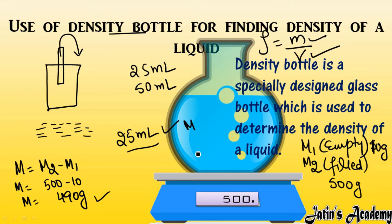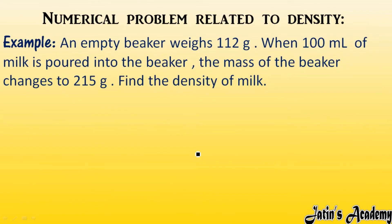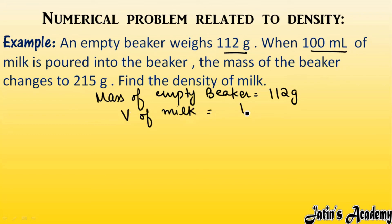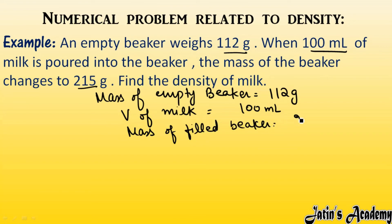Now we have a numerical problem related to the density bottle. The empty beaker weighs 112 grams, so the mass of the empty beaker is 112 grams. When 100 ml of milk is poured into it, the volume of milk is 100 ml. The mass of the filled beaker changes to 215 grams. The empty beaker is 112 grams, but filled with liquid it is 215 grams. We have to calculate the density of milk.